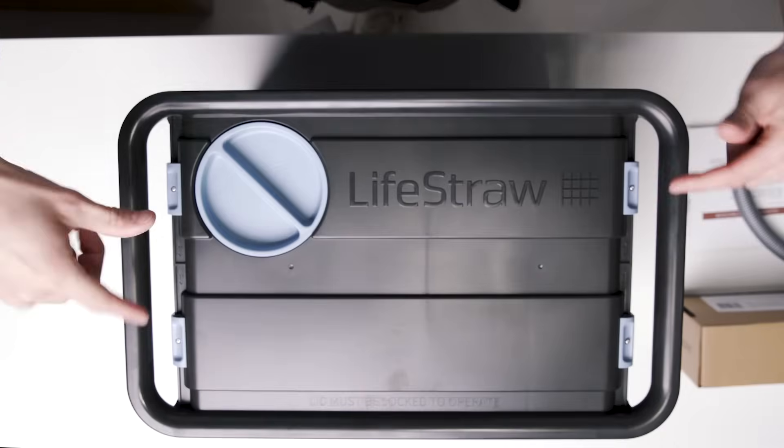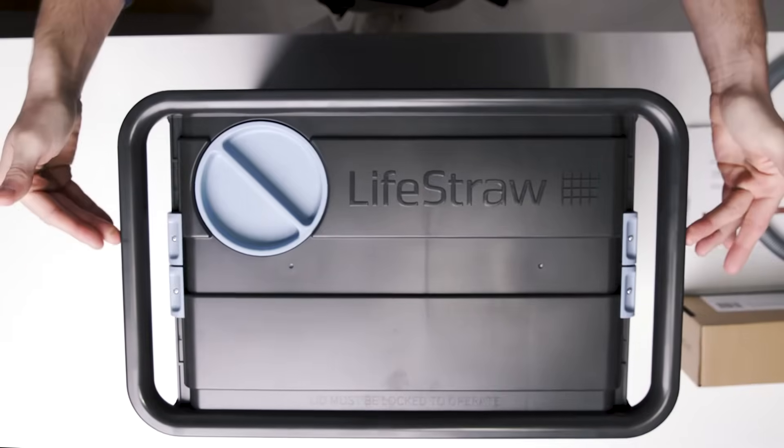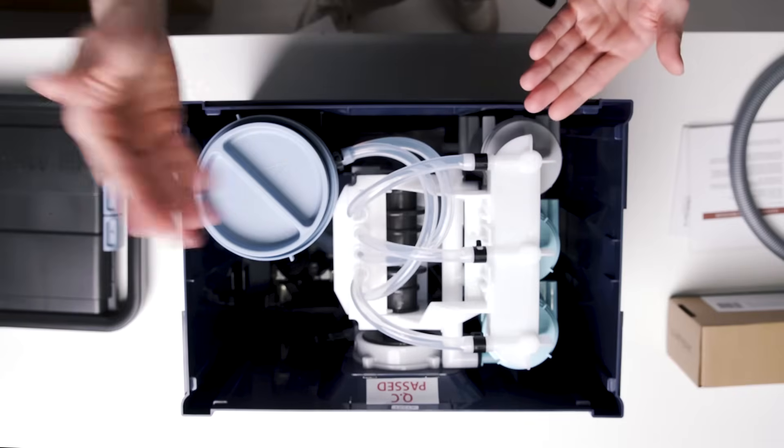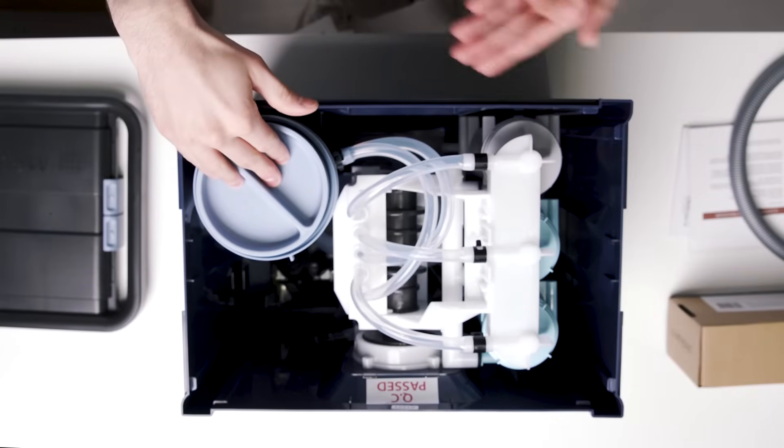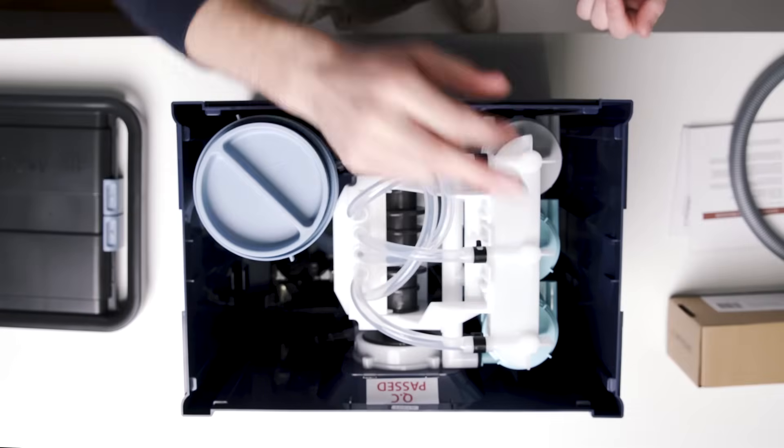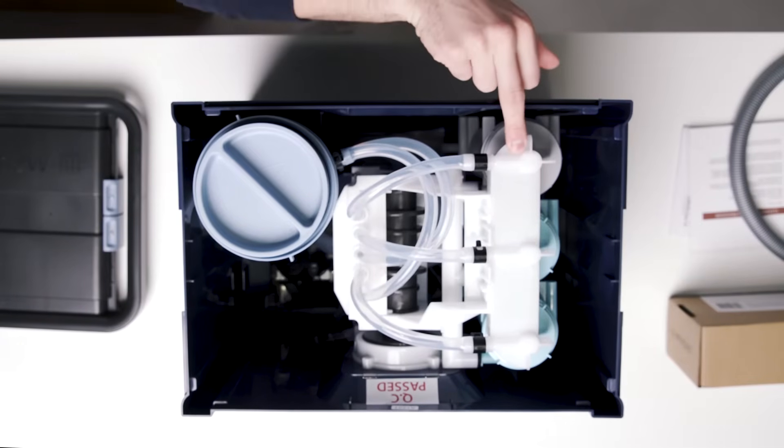On the top of your Max you'll find four locking tabs. Pinch those together and you'll be able to take the lid straight off. Inside your Max you'll find your pre-filter, two membrane ultra filters, and where your carbon filter will go. This is just the housing, it's not pre-installed.